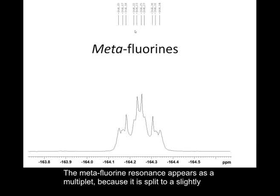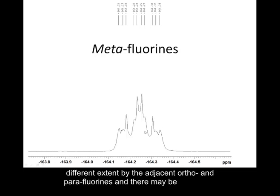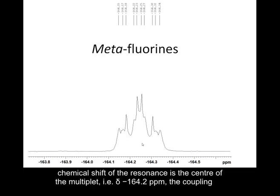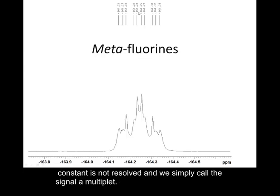Finally, if we look at the meta-fluorine resonance, this is a very complex splitting pattern indeed. It is not sensible or necessary to try to break it down into individual couplings. Clearly there is coupling of the meta-fluorine to the ortho-fluorine and to the para-fluorine, but there also seems to be some longer-range coupling giving a very complex multiplet. When you see a pattern like that, you simply refer to it as a multiplet. The chemical shift of the multiplet is the middle of that multiplet, here at minus 164.24 ppm.